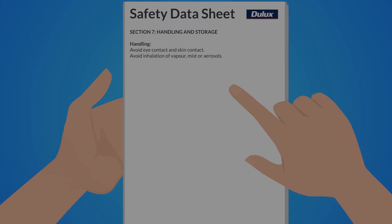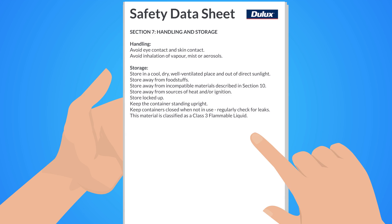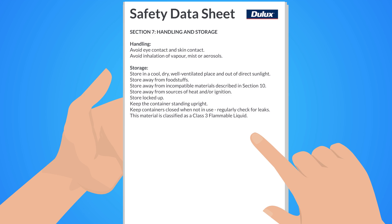Section 7 is another must-read for all those affected. First listed is the advice for the safe handling of the reagent. Then listed is the advice for safe storage, to prevent the substance from becoming a long-forgotten ticking time bomb.